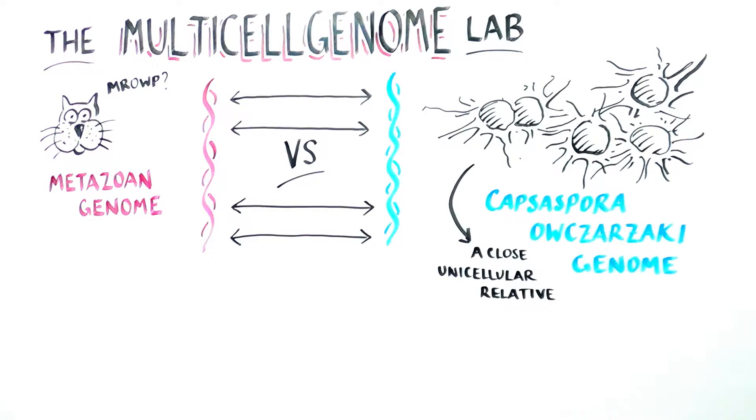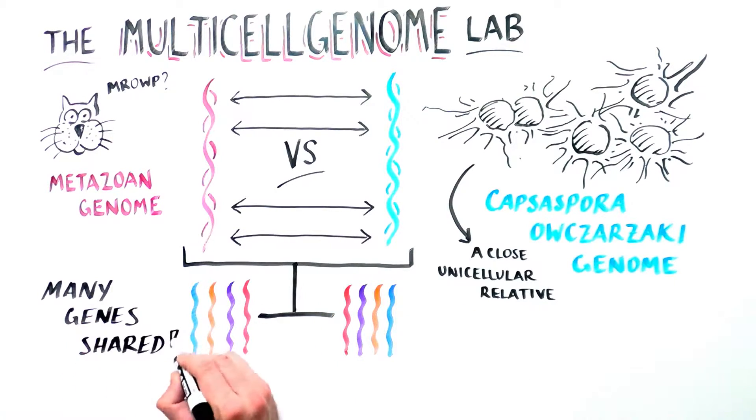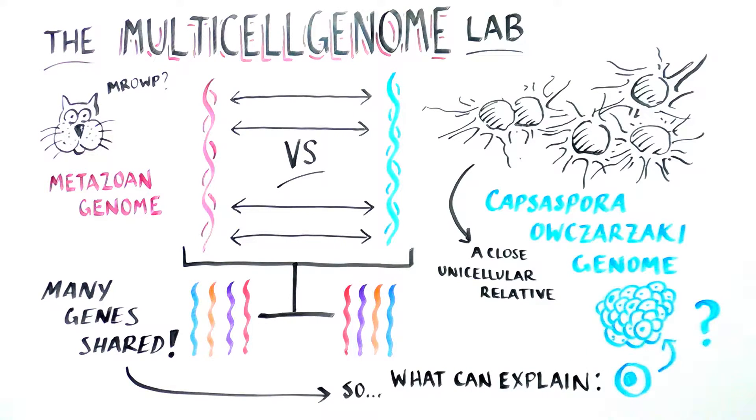Surprisingly, the investigators found that many genes were shared between the two organisms. Given that the common ancestor already had a complex genetic repertoire, gene innovation alone could not explain the origin of animal multicellularity. So what could explain its evolution?